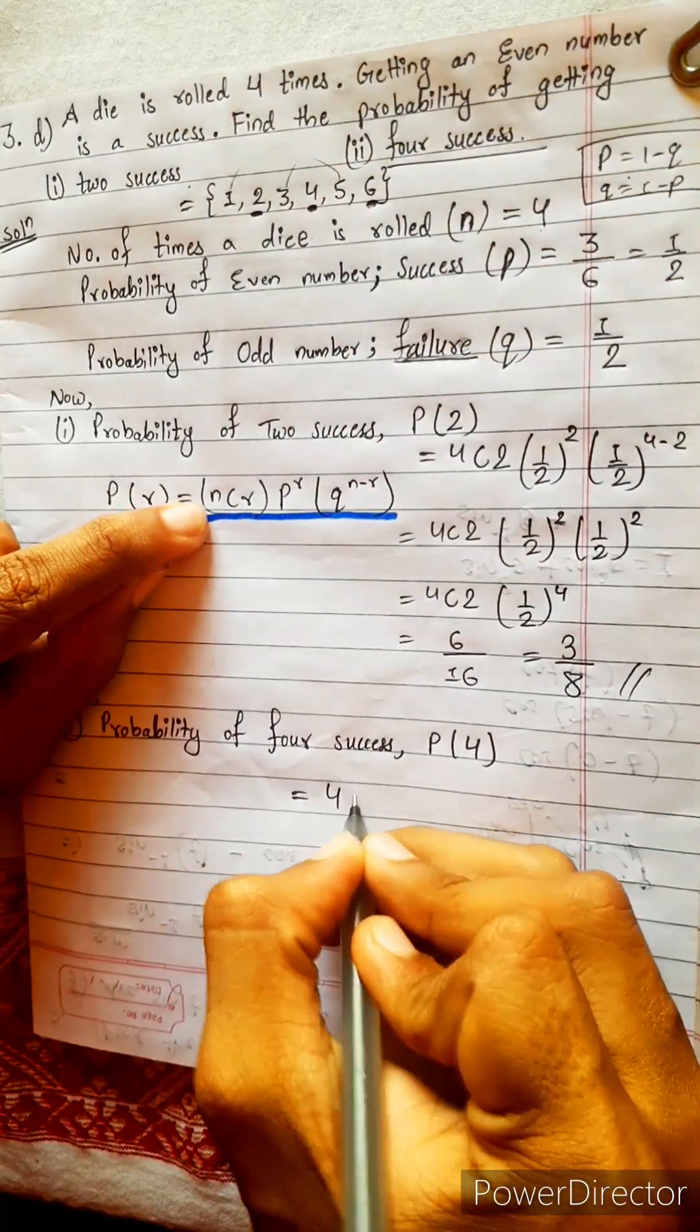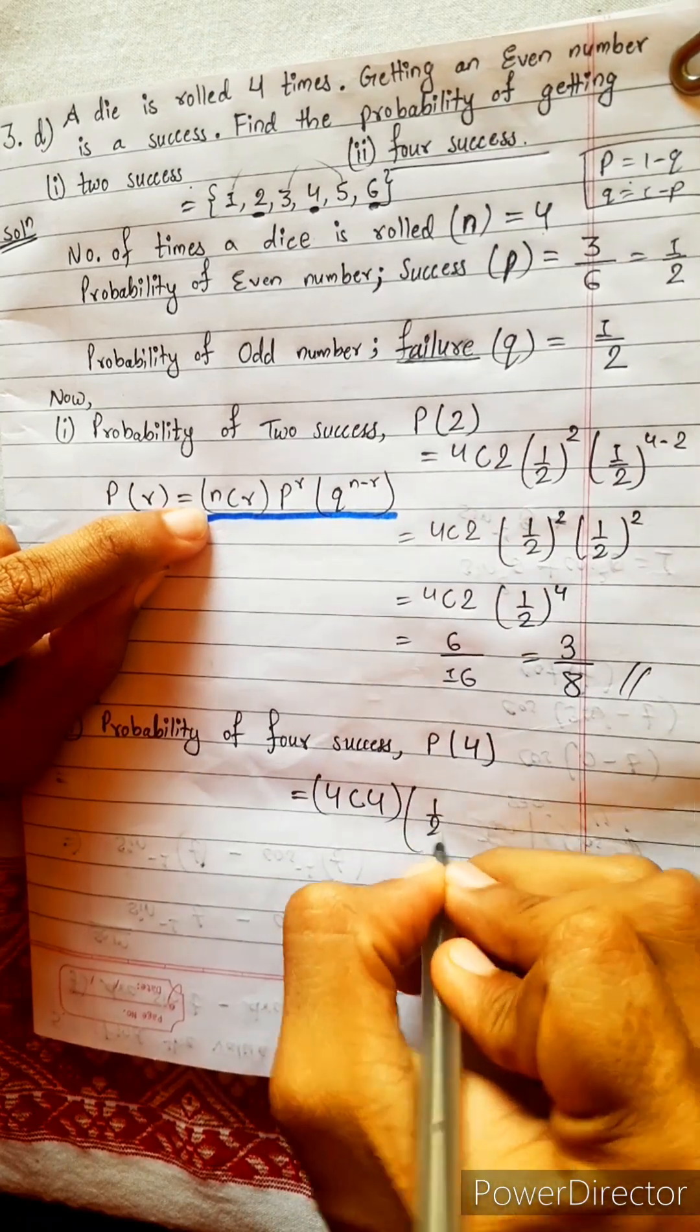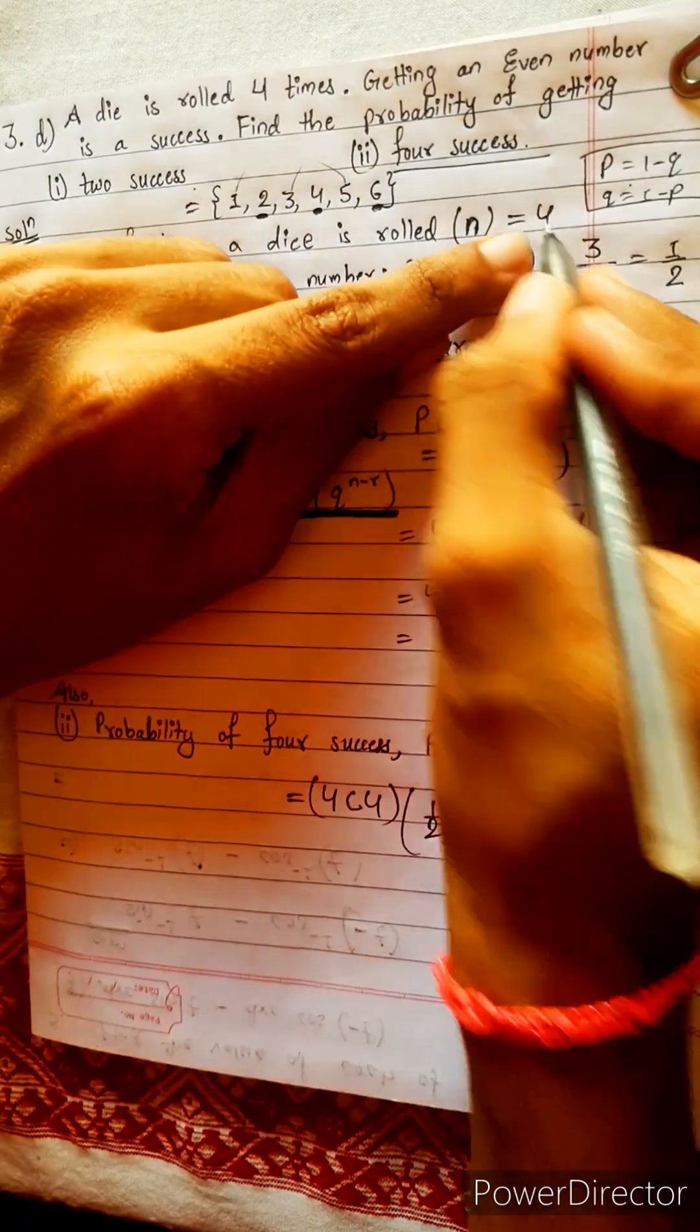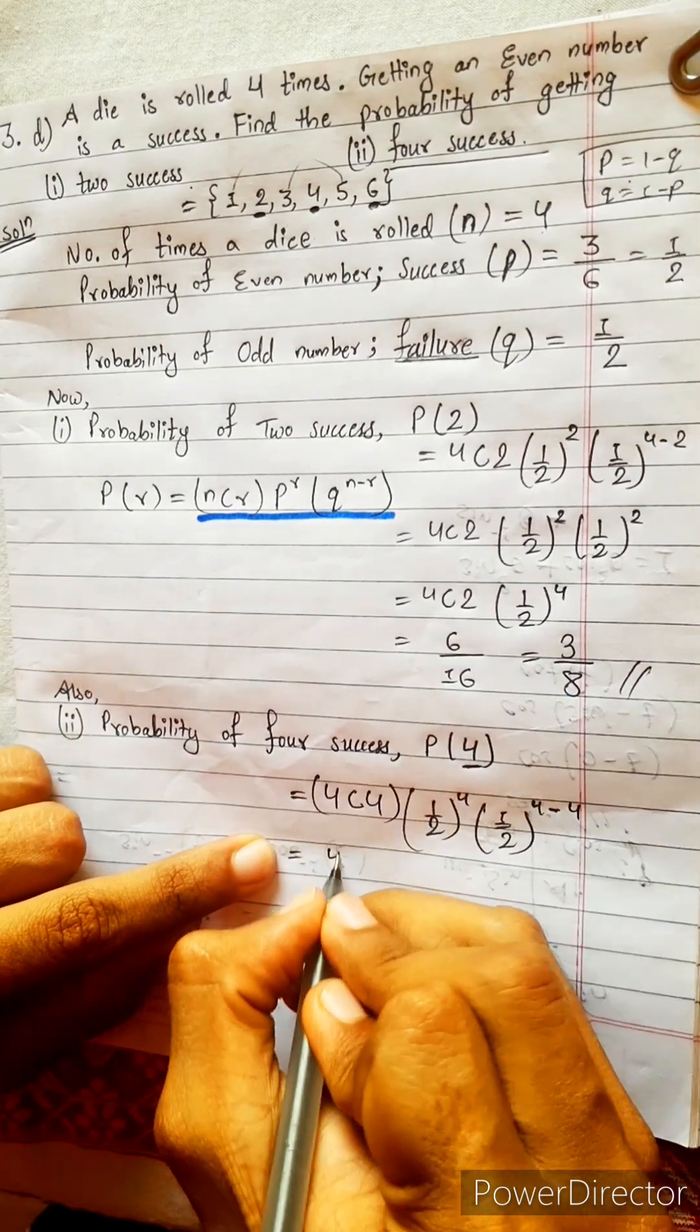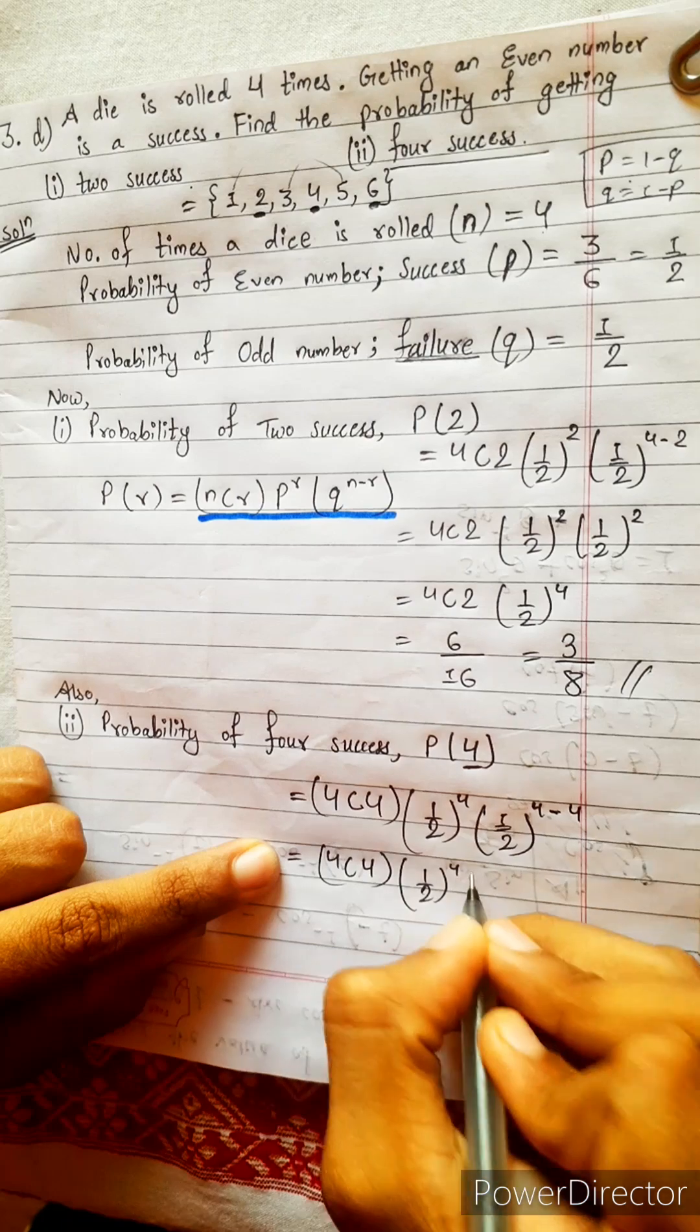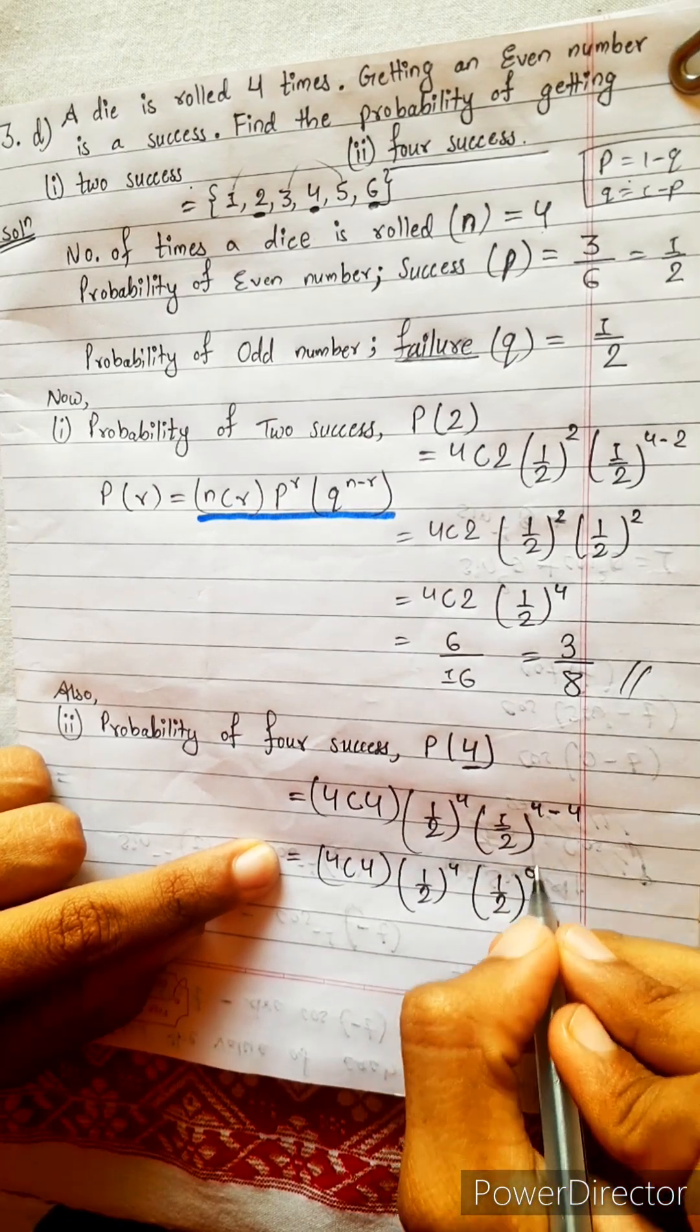n means n means here four. R means here also four. Four, P means one by two power R. R is four. One by two power n minus R. n is four, R also four, four minus four. This is 4C4 multiplied with one by two power four. One by two power four minus four zero, and this zero will be one.